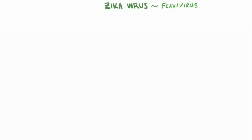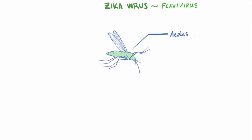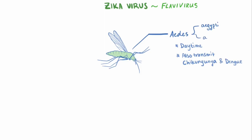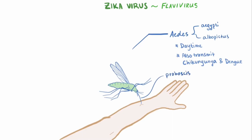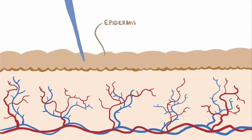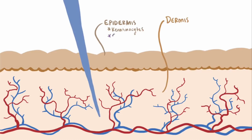The Zika virus is transmitted via mosquitoes in the Aedes genus. These bloodthirsty little guys can bite at night, but are mostly active during the daytime. Aedes mosquitoes are also the same ones that transmit chikungunya fever and dengue fever. When Aedes aegypti or Aedes albopictus, both species of the Aedes mosquito, lands on your skin and sticks in its long nose, or proboscis, it pierces the epidermis, which is the topmost layer. Since the epidermis just gets oxygen from the air and doesn't have its own blood supply, whereas the dermis does, and that blood meal is what our mosquito is after.